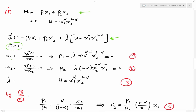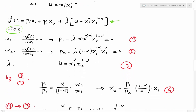I take the first-order conditions: with respect to x1, I get equation one; with respect to x2, I get equation two; and with respect to lambda, my constraint gives equation three. By dividing equation one over equation two I can simplify and get equation number four.